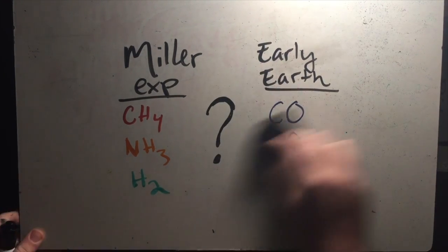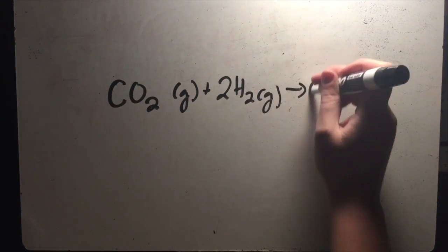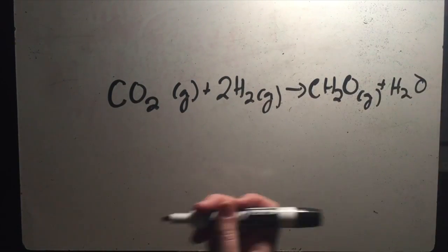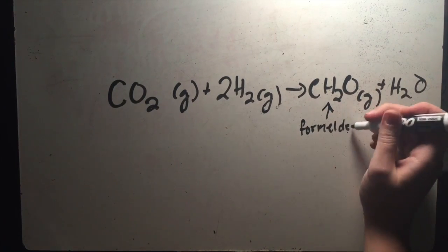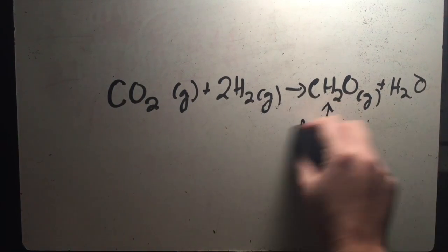One answer is this equation: carbon dioxide and hydrogen gases were both present in the primitive Earth atmosphere, and they produced formaldehyde, an extremely important player in chemical evolution.